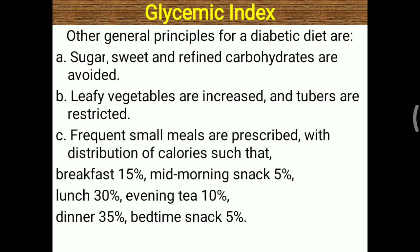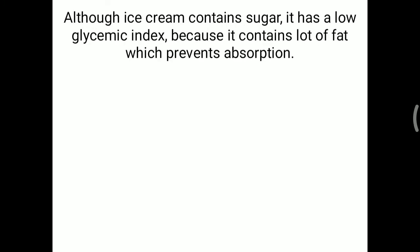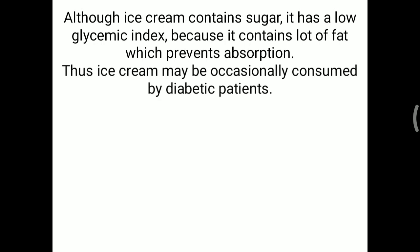Instead of giving total calories 3 times, they should be divided into 5 to 6 different groups to reduce sudden rises of blood glucose in the diabetic patient. Interestingly, ice cream contains lots of sugar but has a low glycemic index of 35 to 40, because it contains lots of fat which prevents rapid absorption. So a diabetic patient may occasionally consume ice cream — preferably sugar-free type. That is all about glycemic index and important points in relation to diet for diabetic patients.